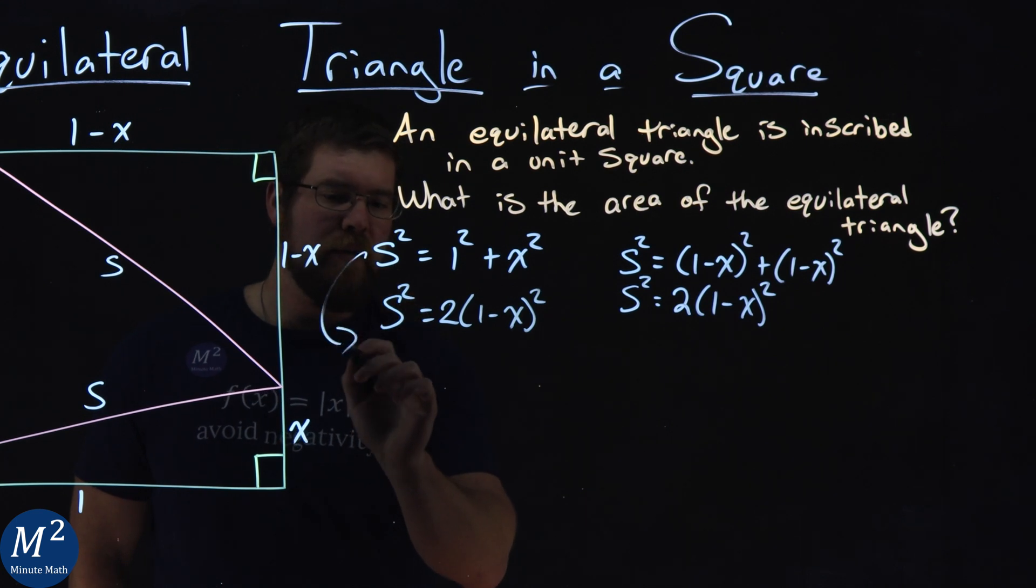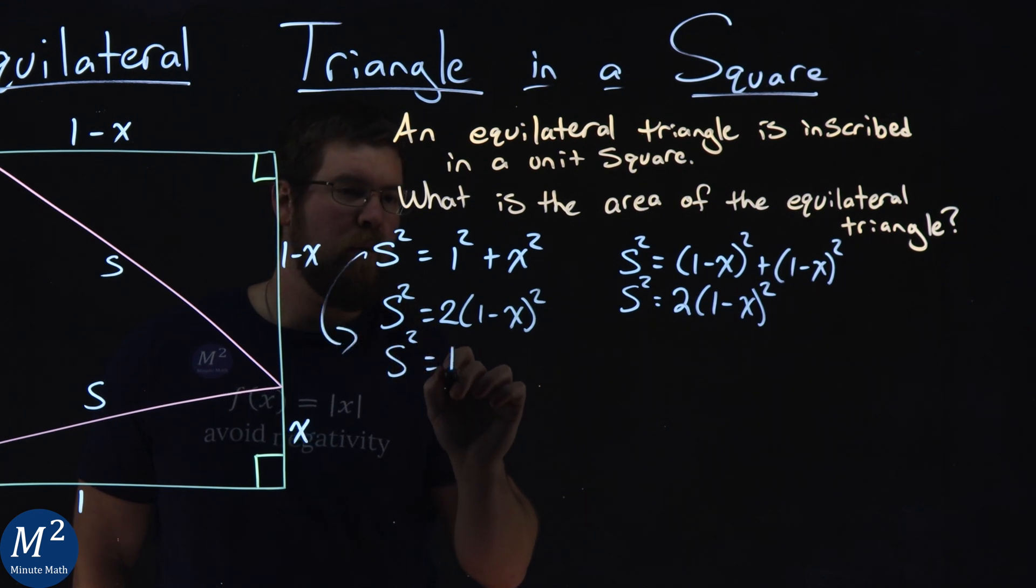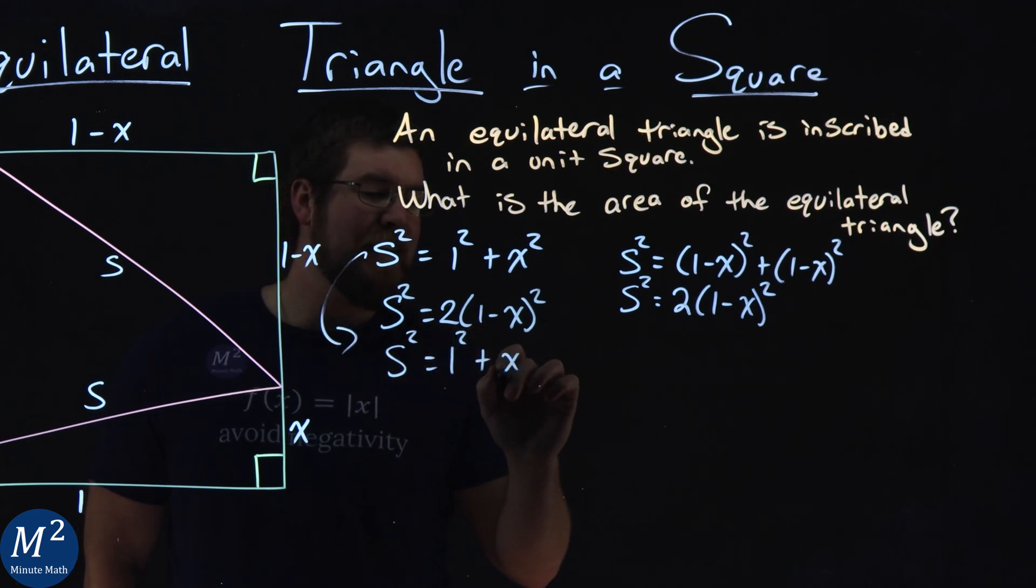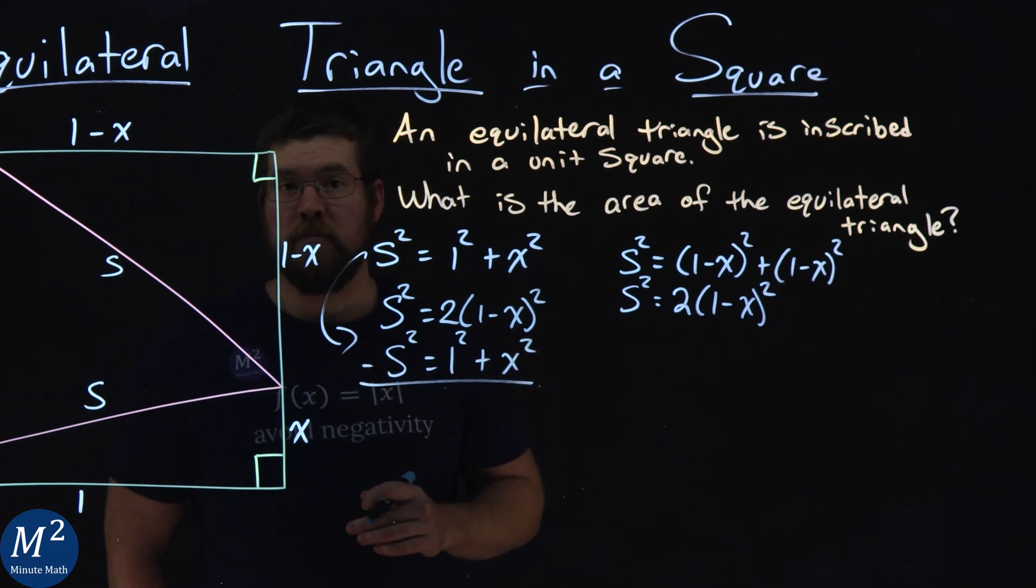We have S squared equals 2 times (1 minus X) squared. And I'll subtract the first one down here, that S squared equals 1 squared plus X squared right there. And let's subtract them.